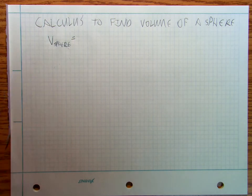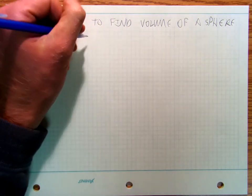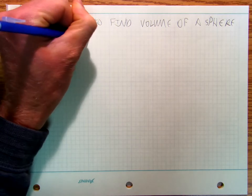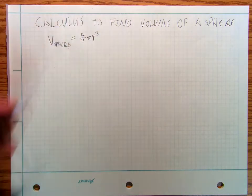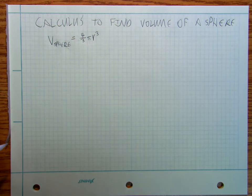So you should be able to memorize that, hit pause, come back. Volume of sphere, 4 thirds pi r cubed. Okay how are we going to get there?